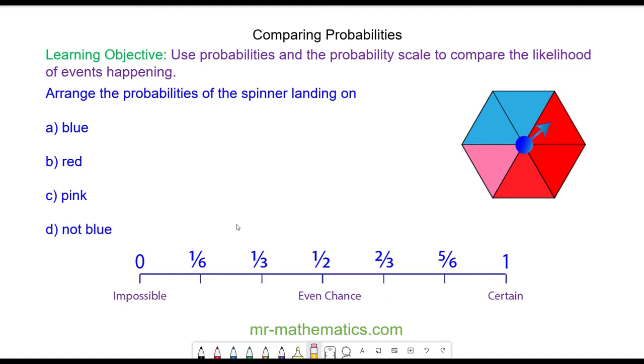Hello and welcome to our lesson on comparing probabilities. So we need to remember the probability of an event is the number of desired outcomes divided by the total number of outcomes possible.